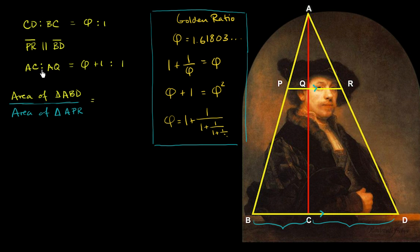And this next clue is what tells us that Rembrandt really thought about this. The ratio of AC to AQ — where AC is the altitude of the larger triangle and AQ is the altitude of the smaller top triangle — that ratio is phi plus 1 to 1. So you could say that ratio equals phi plus 1. Clearly Rembrandt thought a lot about this. Now, using all of that information, let's explore a little bit.